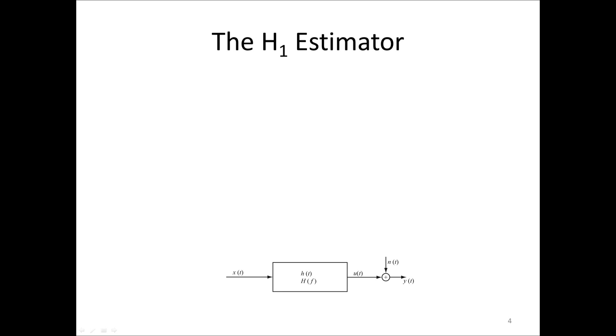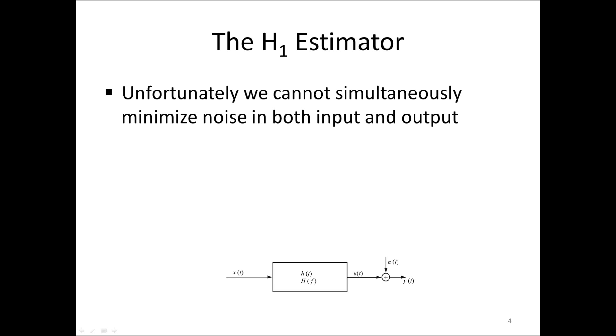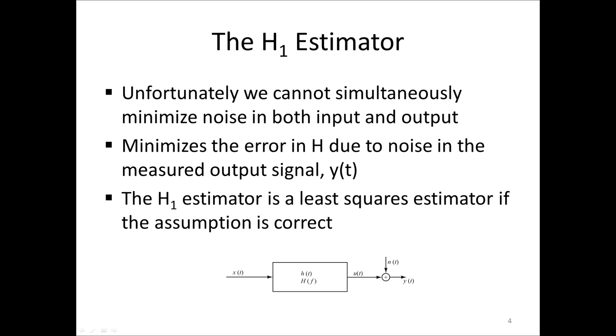Now, in the general case, with noise on both the input and output signals X and Y, we cannot optimize an FRF estimate. If we assume that the input signal is not contaminated by any noise, we can define the so-called H1 estimator. This estimator is a least squares estimator if the assumption is correct.